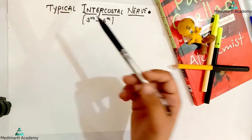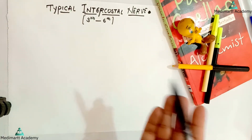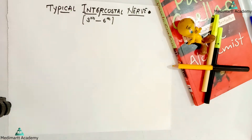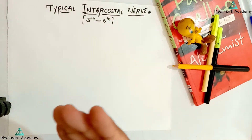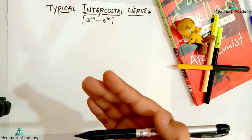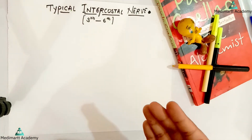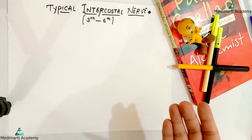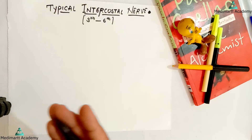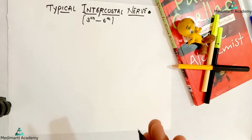The question is how the intercostal nerve is formed. It is formed by the ventral ramus of the thoracic spinal nerve. The spinal nerve is formed by the ventral and dorsal roots and it is a mixed nerve. From this spinal nerve, one ventral ramus and one dorsal ramus come out. The dorsal ramus supplies the muscle and skin of the back, and the ventral ramus supplies the muscle and skin of the anterolateral body wall and the limbs. This ventral ramus finally supplies the thoracic wall and thus it is called the intercostal nerve.